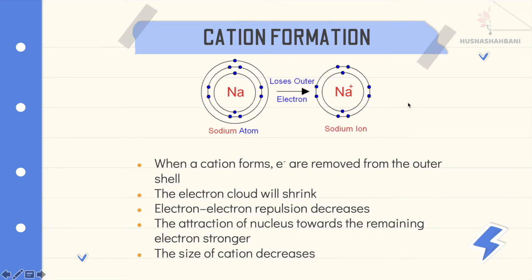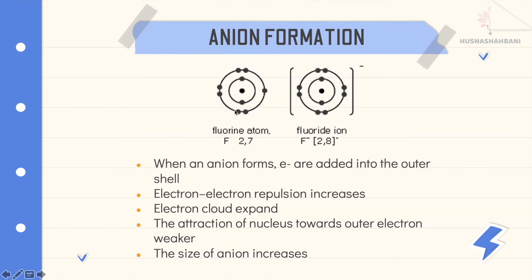In sodium ion, there are fewer electrons compared to the sodium atom. When the number of electrons decreases, electron-electron repulsion decreases. The attraction of the nucleus towards the remaining electrons is stronger because the number of protons in the nucleus remains the same but the number of electrons decreases. That's why the size of the cation decreases.